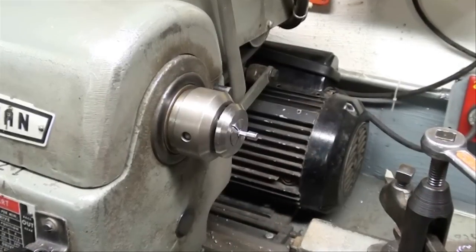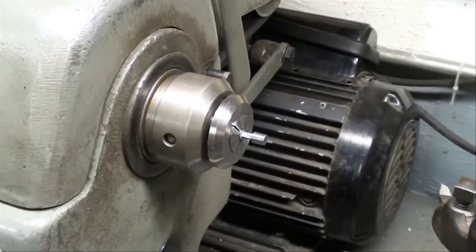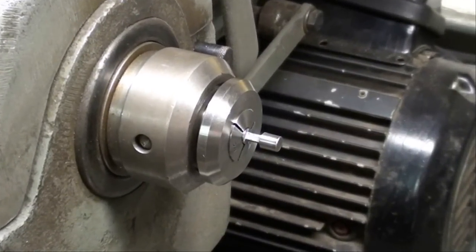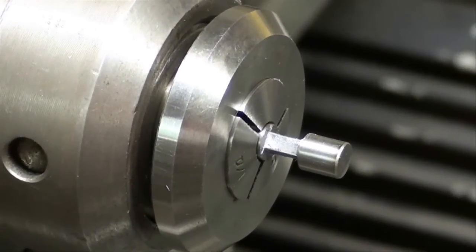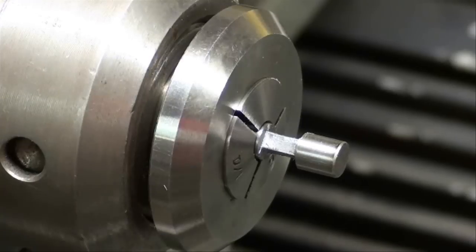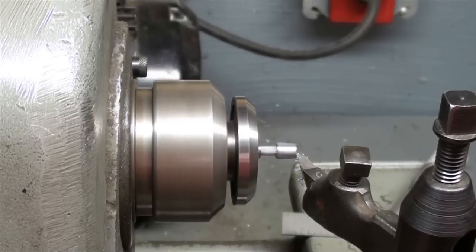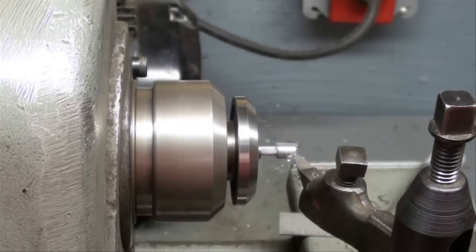Then we're ready to put it in the lathe and turn the end down. Now the work is held in a quarter-inch collet on my Atlas lathe and I'm going to turn that end down to 125 thousandths. Right here.